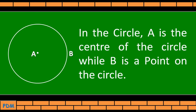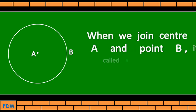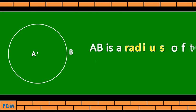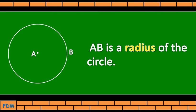In the circle, A is the center of the circle while B is a point on the circle. When we join center A and point B, it is called a radius of the circle. AB is the radius of the circle.